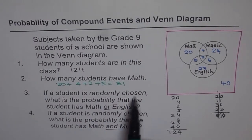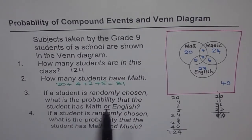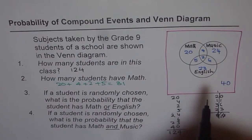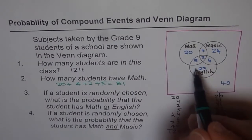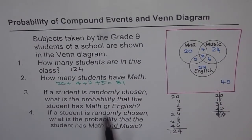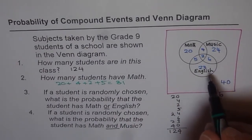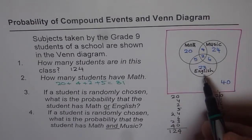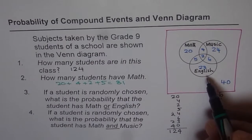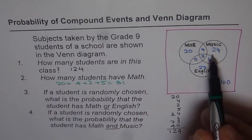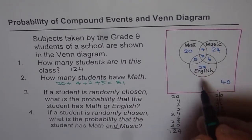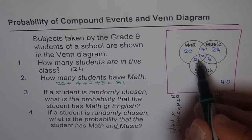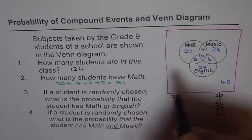If a student is randomly chosen, what is the probability that the student has math or English? Math or English means we add them up, but we have to take away what is common — this event is mutually not exclusive. Since the numbers are given to us in the Venn diagram, we need not count them twice. We know 31 is for the math circle, so we're not counting 5 and 2 again. We just count 31, 6, and 23.